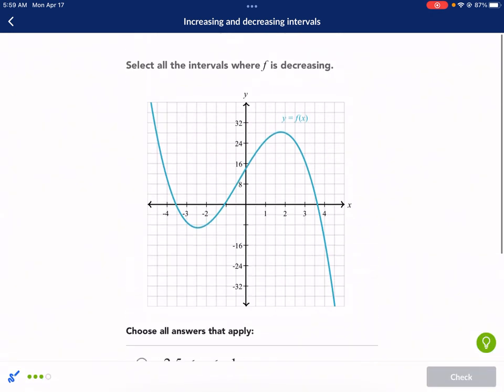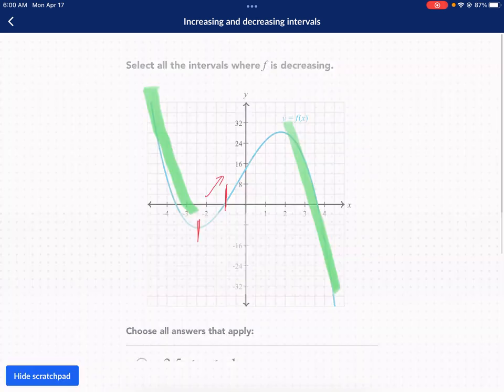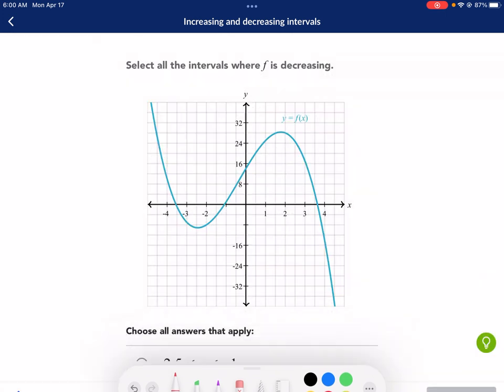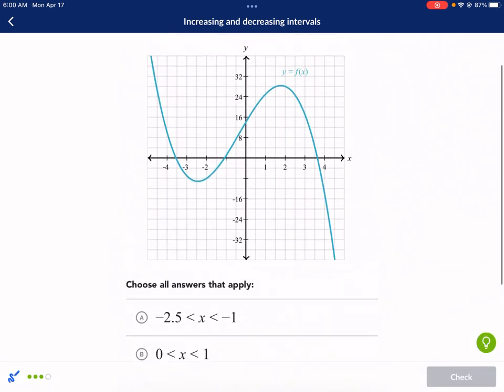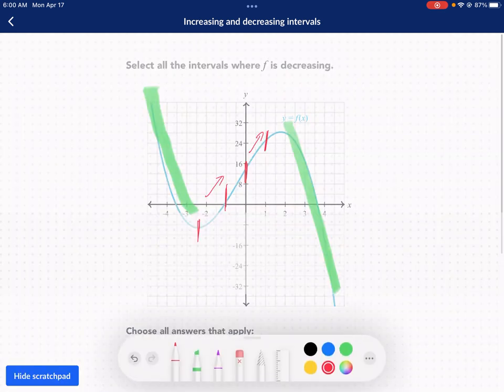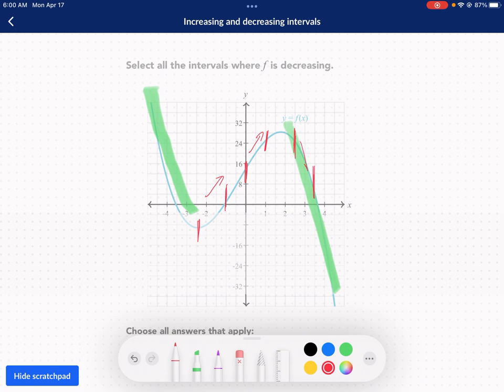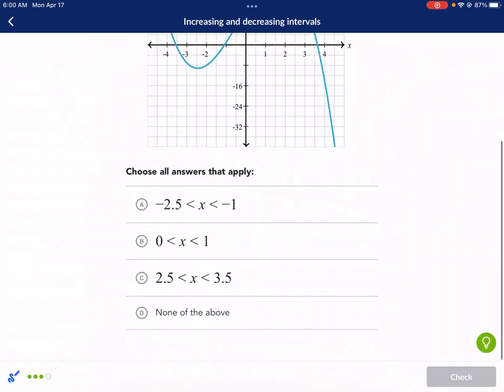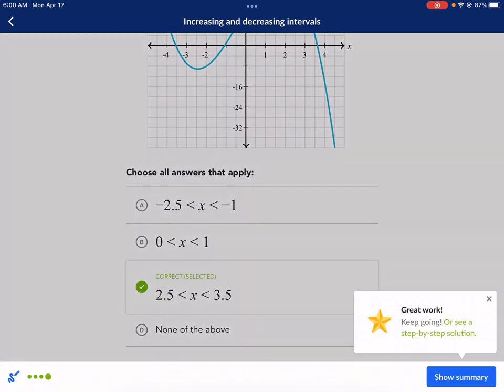0 to 1 is right here. 0 is right here and then 1 is right here. We can see that's increasing. Another increasing. That's not good. 2.5 to 3.5. Take a look at this one. Looks like this one's going to be decreasing. 2.5 is here. 3.5 is there. It's on its way down. So that's going to be our choice. And that's all it has to do.